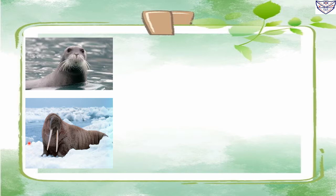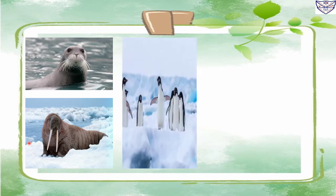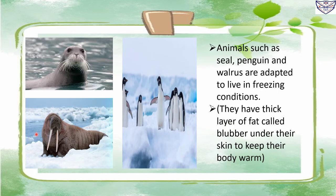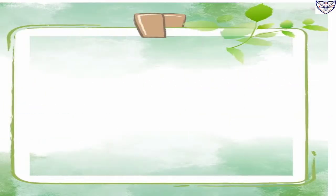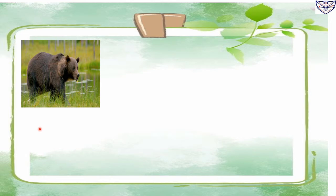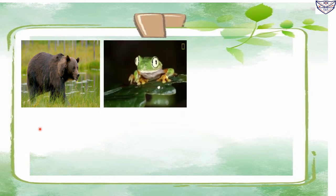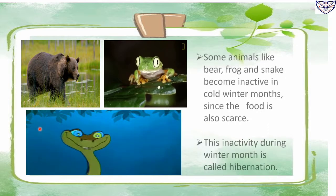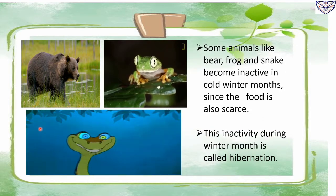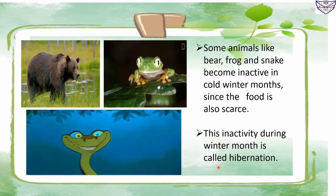Animals such as seal, penguin, and walrus are adapted to living in freezing conditions. They have a thick layer of fat called blubber under their skin to keep their body warm. Some animals like bear, frog, and snake become inactive in cold winter months since food is also scarce. This inactivity during winter months is called hibernation.